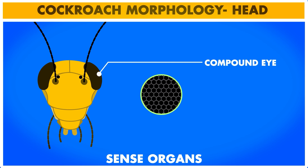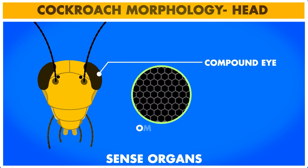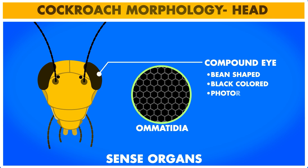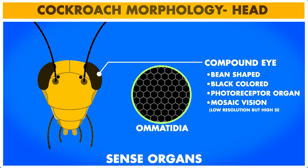Two large black-colored and bean-shaped compound eyes are dorsolaterally placed on the top of the head. Each compound eye is made up of 2000 hexagonal units called ommatidia. These ommatidia receive light and provide a mosaic vision to the cockroach. This type of vision has low resolution but very high sensitivity, which is required for the nocturnal habit shown by the cockroach.